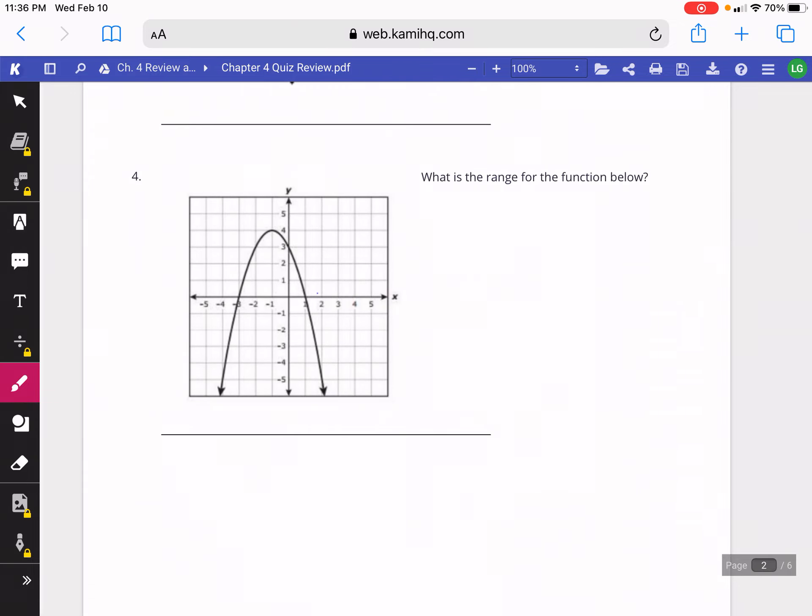This next question is asking us to find the range for the function shown below. Remember, for range we use the letter y and you look from bottom to top. Here, if you look at the bottom of the graph, it's going to keep going down. You look at the top, it goes up to about 4. Since it's going down, we're going to use the less than or equal to symbol, and it's going down from 4. So the range, or all the y values in this graph, would be less than or equal to 4.